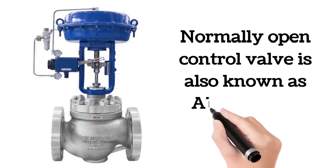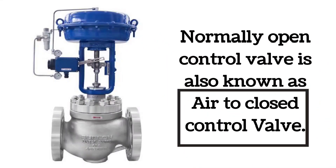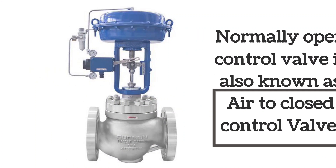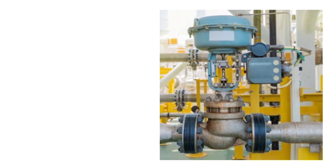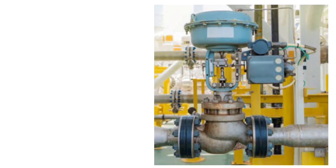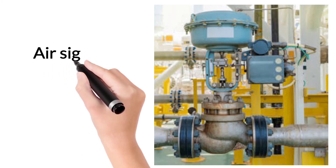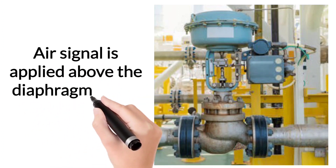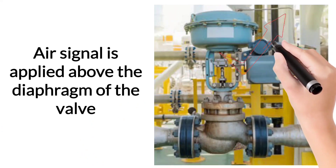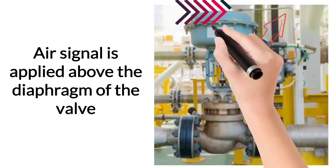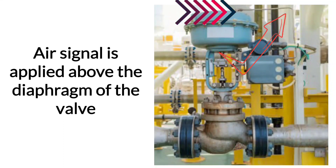A normally open control valve is also called an air-to-closed control valve. In the image, you can see a normally open or air-to-closed control valve where the air signal is applied above to the control valve diaphragm. When an air signal is applied over the diaphragm, the control valve starts closing — that's why it is called an air-to-closed control valve. In the absence of air, this valve remains open, hence it is called a normally open control valve.